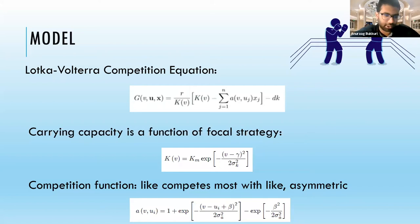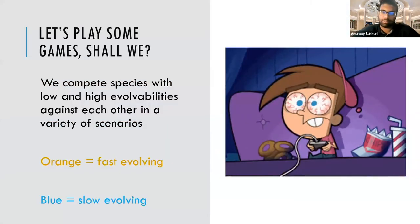For the competition function, we assume that likes compete most with likes. When the strategies are the same, our A equals 1. We also introduce an asymmetry term, so less aggressive species with a V less than 0 experience more competition from species with a higher V. So now that we've set this all up, let's play some games.